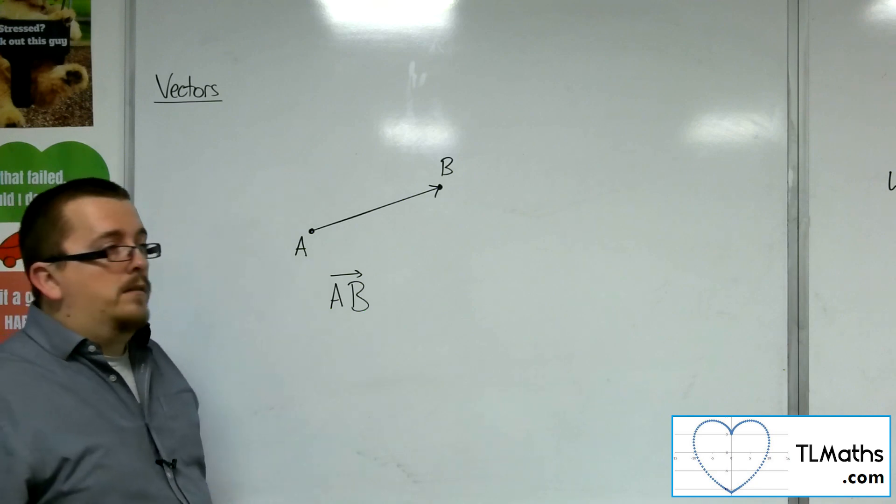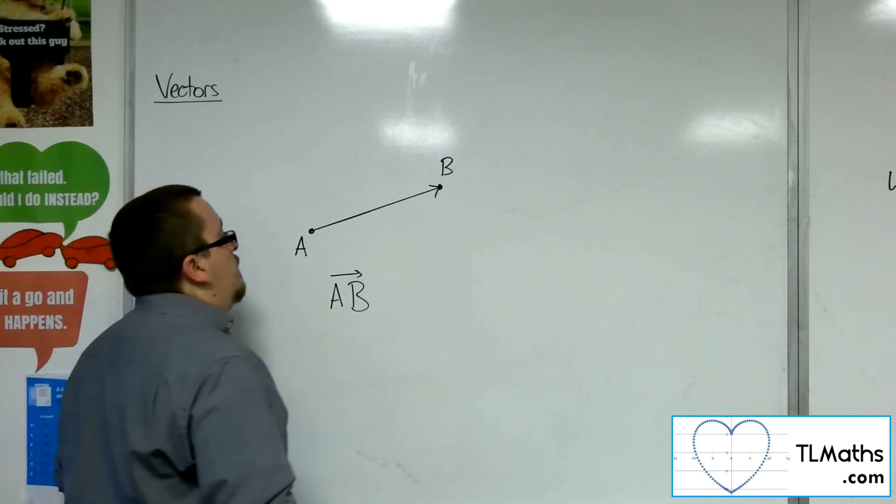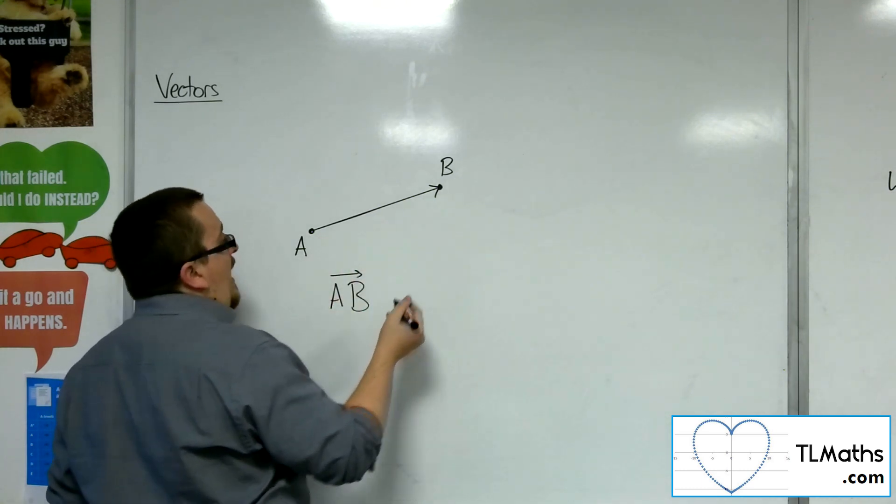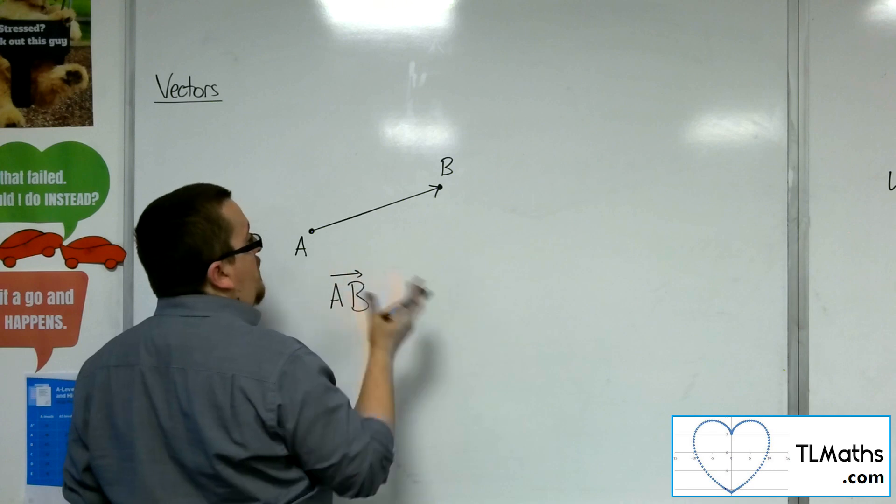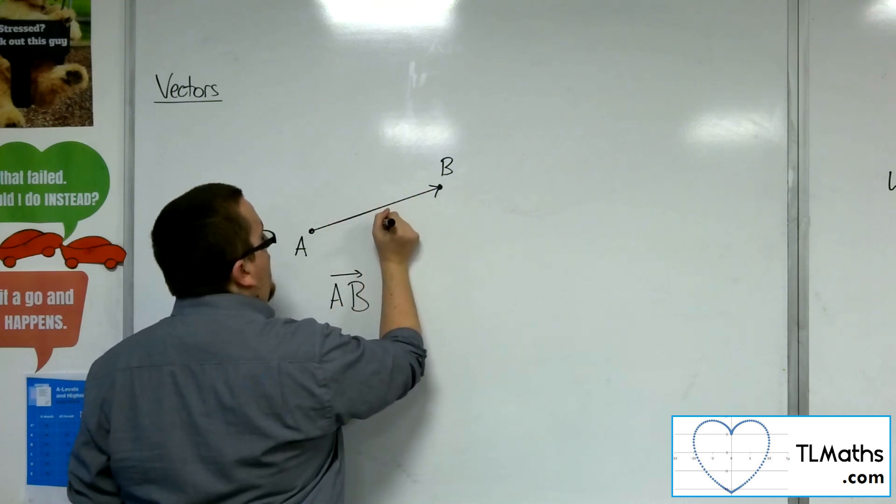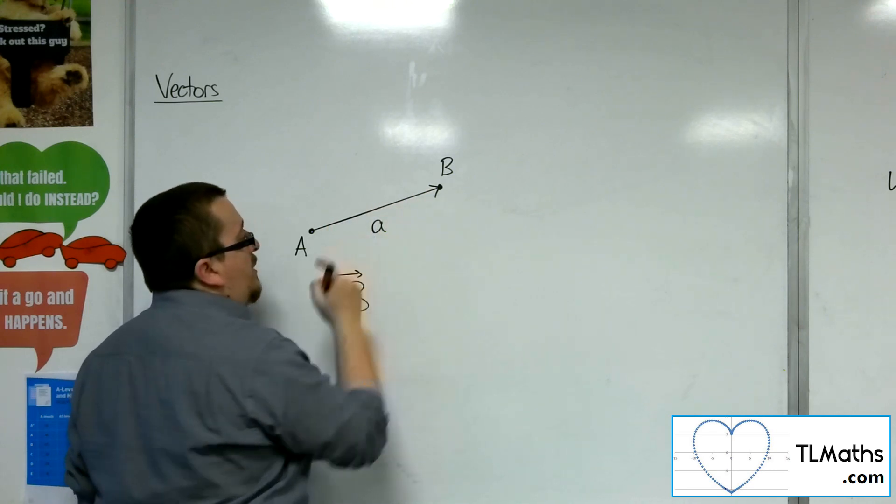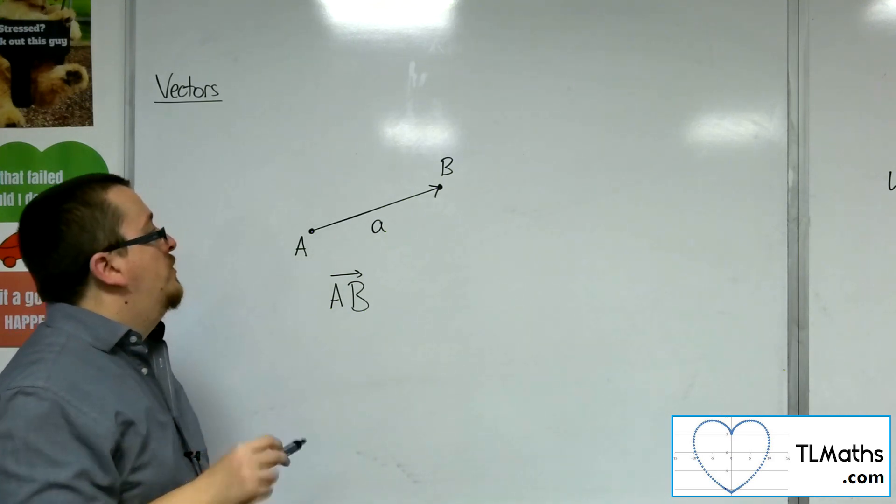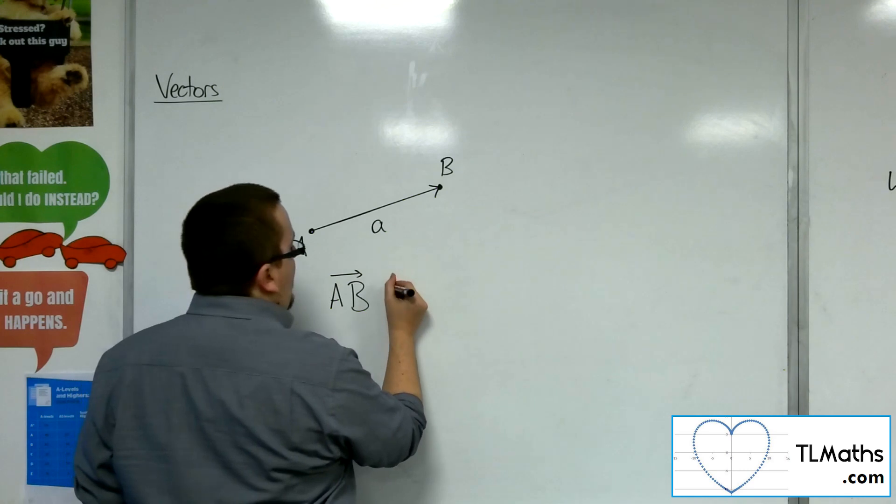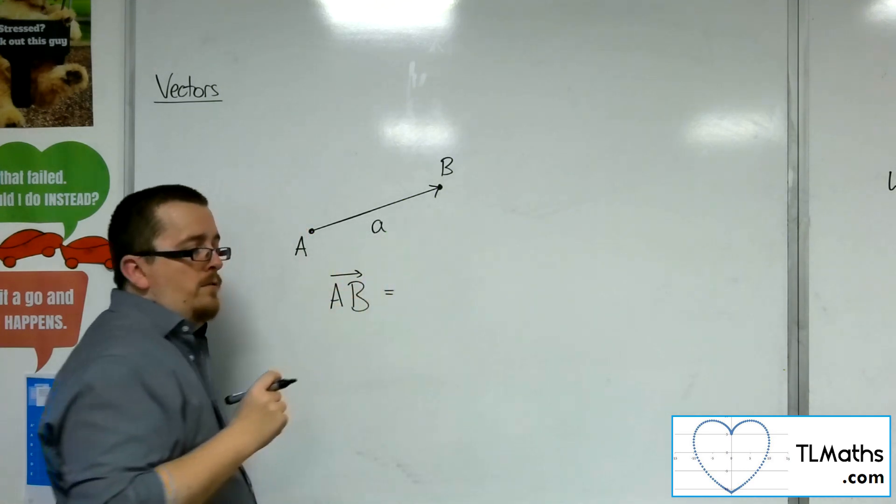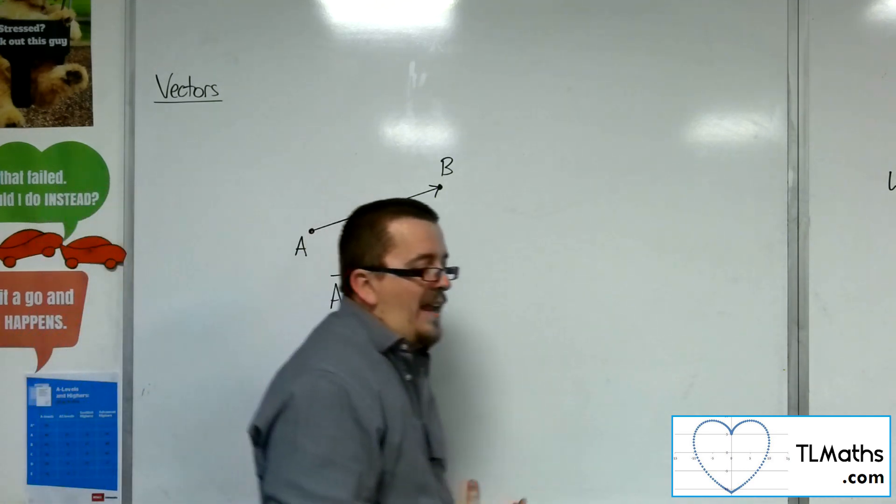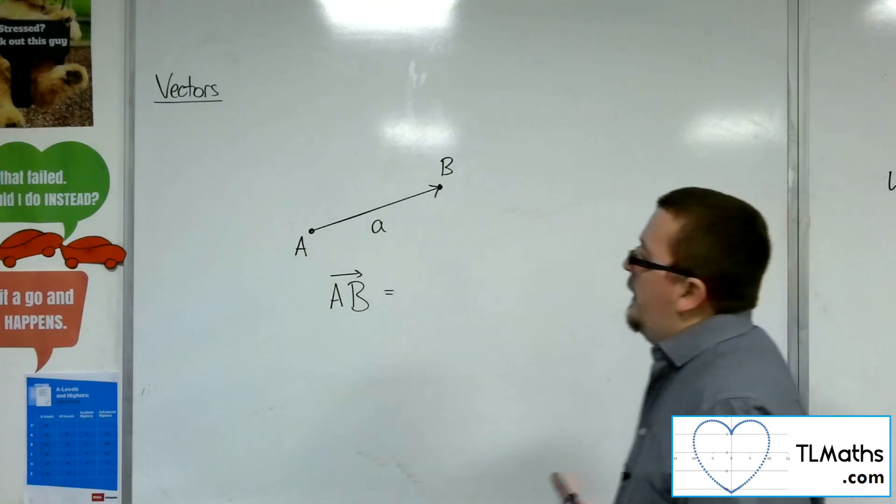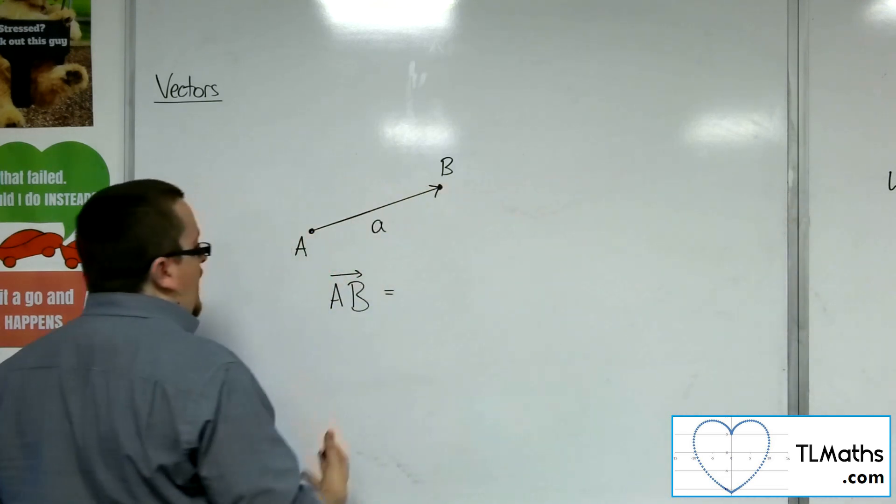So that's one way. Other ways of doing it, we could identify this using a vector just given by a letter. So we could give this the letter A, but I can't just write it as A by itself, just as a lowercase letter. I need to have some semblance, because that would be deemed as a scalar quantity, just a number, an amount. It doesn't have any direction attached to it.